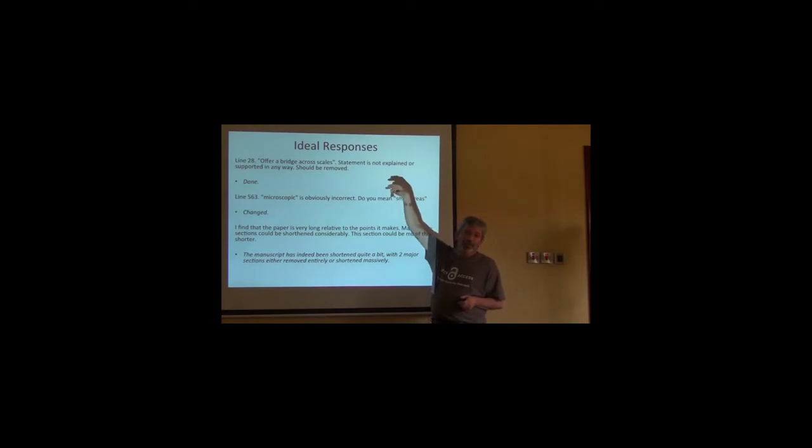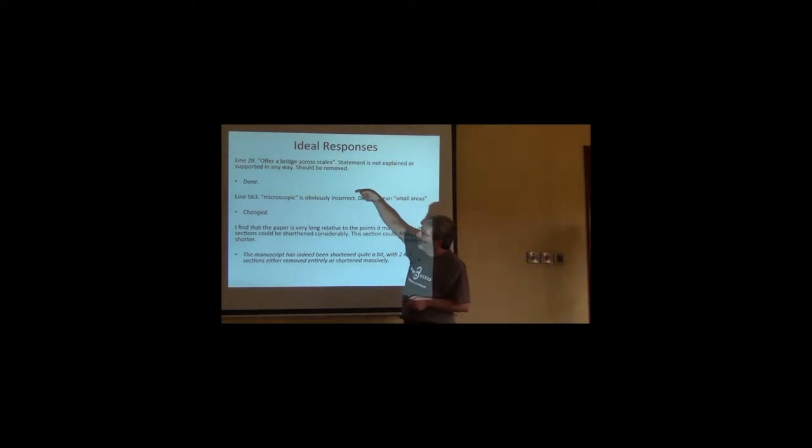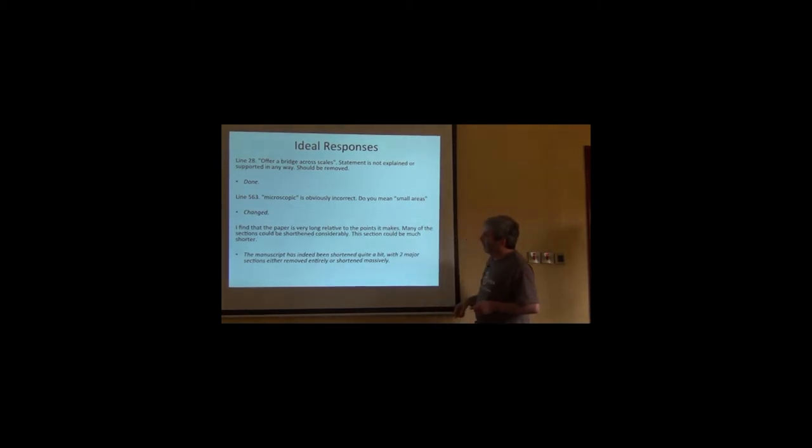So how do you do it? I like separating the comment from the reviewer and my response very clearly and very visually. Don't make the editor work to find the information that he or she needs to be able to accept your paper without further review. So, very best responses are these. Then here, I find that the paper is too long. The manuscript has been, this is my answer, the manuscript has been shortened quite a bit with two major sections removed entirely or shortened massively. May not be obvious to the editor that I removed those sections. So I want to make sure that he or she can see it.